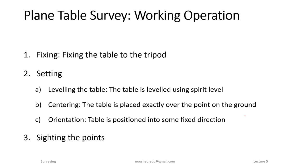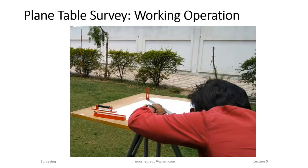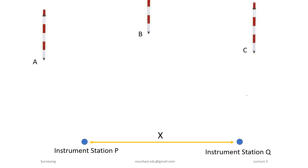The next operation is sighting the points. The field observation involves sighting from one point, which produces radial lines. If you want to see the size of the area, you align to the area and observe the diameter in detail.